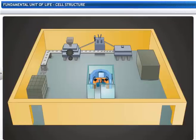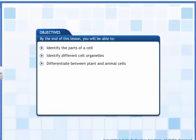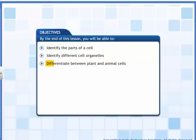Did you know that just like this factory, there are tiny factories in our bodies as well? Sit back and take a trip of the factory running in our bodies. By the end of this lesson, you will be able to identify the parts of a cell, identify different cell organelles, and differentiate between plant and animal cells.